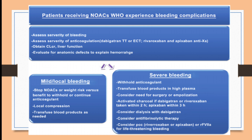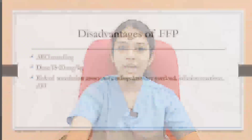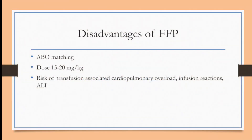When deciding between FFP and four-factor PCC, the disadvantages of FFP include: requirement for ABO cross-matching, high dose requirement (15–20 ml/kg), and risks of transfusion-associated cardiopulmonary overload, infusion reactions, and acute lung injury. In patients with renal failure or cardiovascular abnormalities, FFP can cause pulmonary edema.